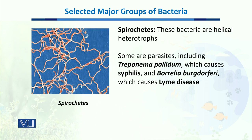Then we have spirochetes. Spirochetes are helical heterotrophs and they are parasites. This group includes Treponema pallidum, which causes syphilis, a sexually transmitted disease in humans. And then we have Borrelia burgdorferi, which causes Lyme disease in humans.